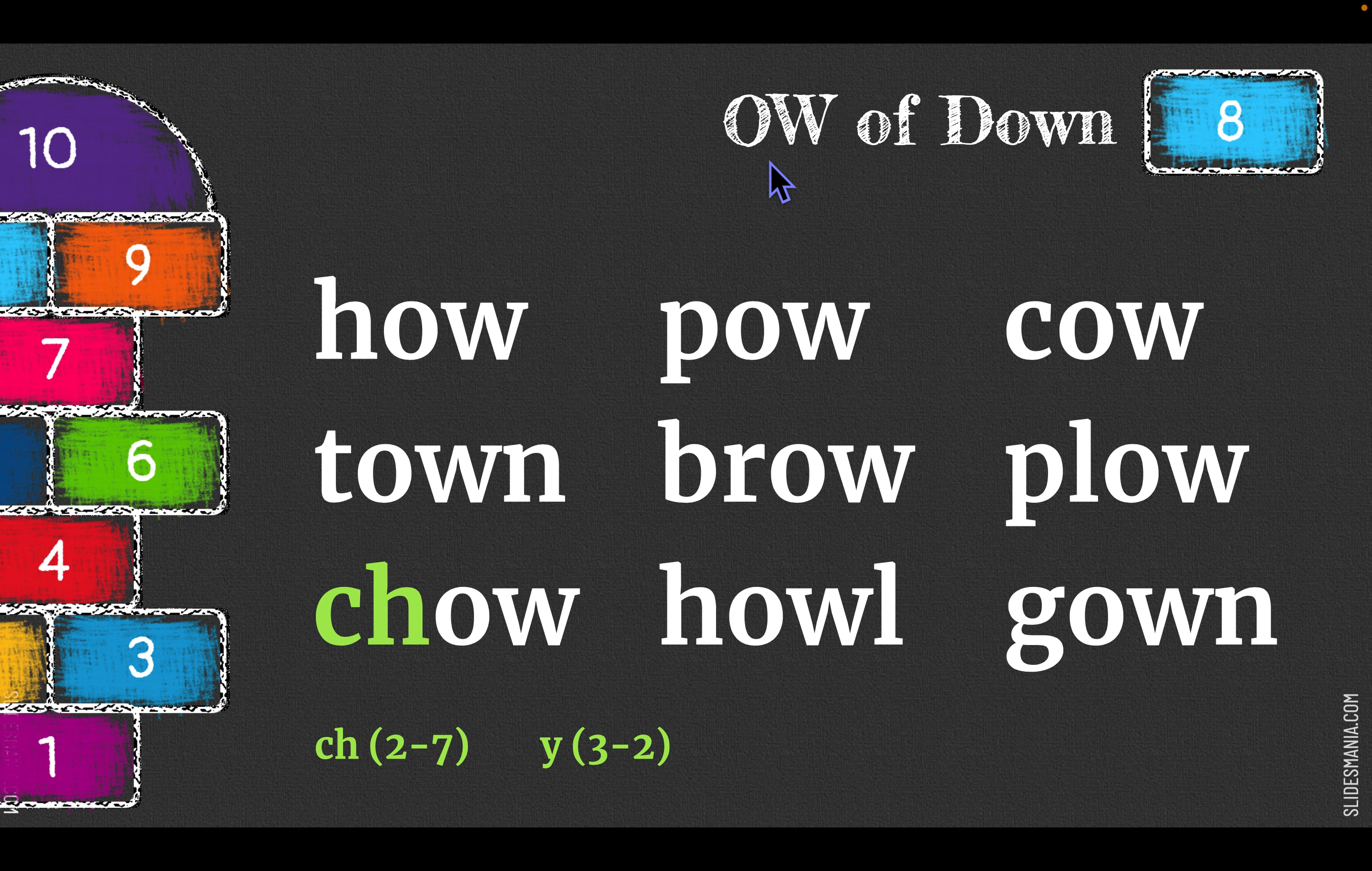Let's practice some words with the OW sound of down: how, pow, cow, town, brow, like your eyebrow.